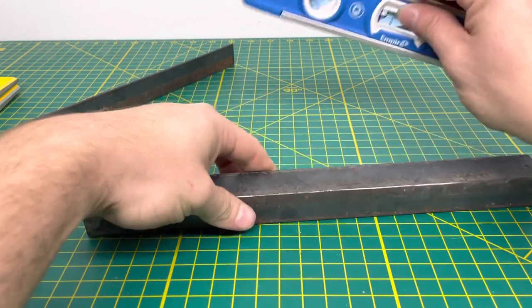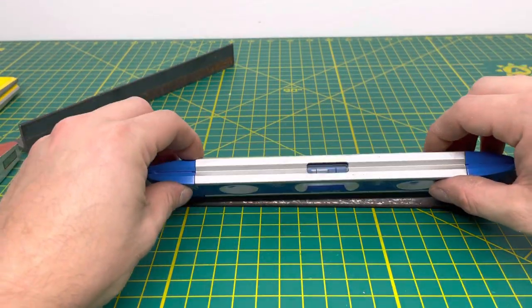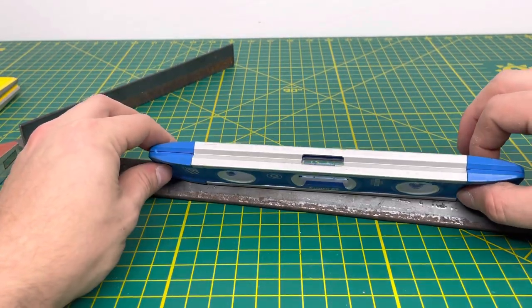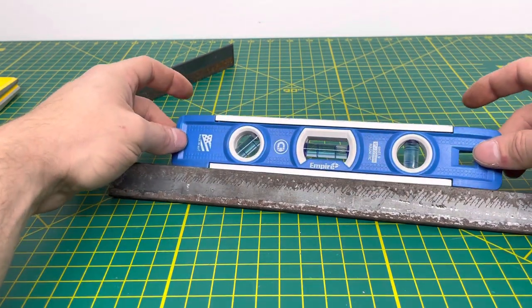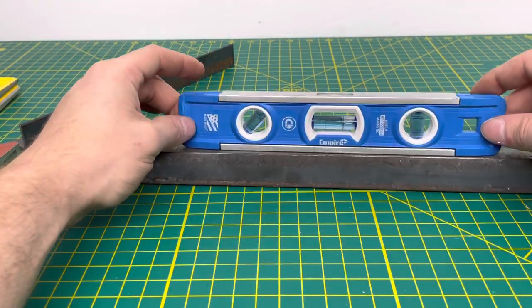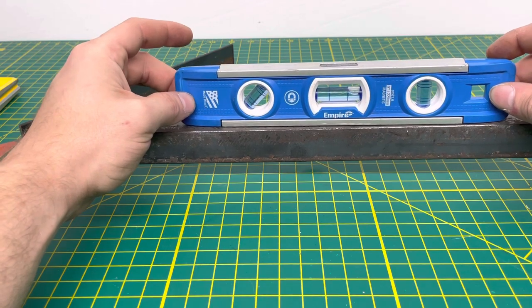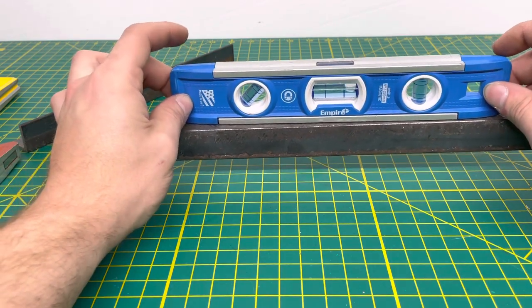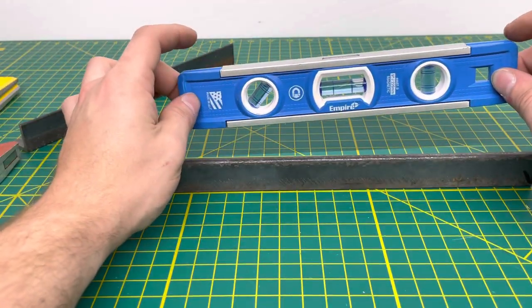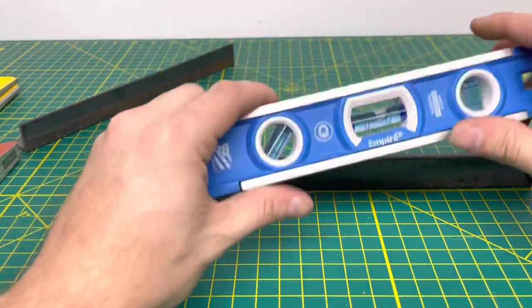That was the thin gauge metal. We'll see how well it performs with this thicker gauge metal. Again, it will stick to the thicker gauge metal. But picking it up, as you can see, is a little bit challenging. It can't quite do it sometimes, but other times it can. And again, this leads to movements and the level does fall off.